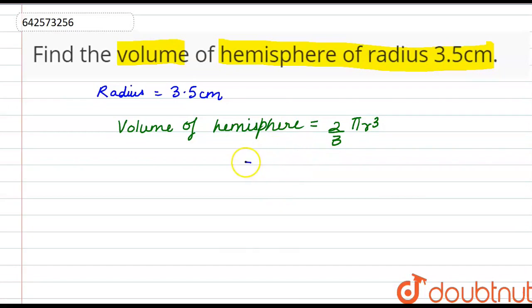we get the volume as 2/3 × 22/7 × (3.5)³. So this is the value for the volume of the hemisphere.